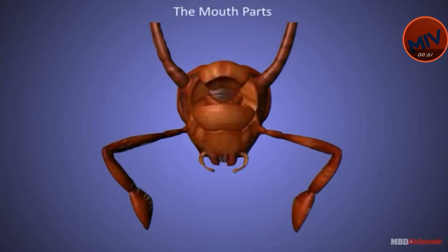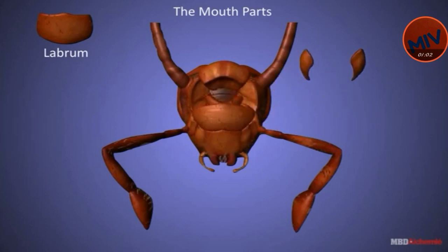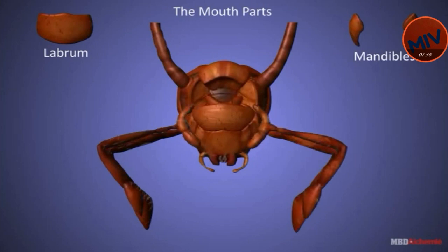Mouthparts: They help the cockroach in biting and chewing its food. Labrum is a broad, movable, rectangular and notched plate. Mandibles are a pair of highly sclerotized triangular structures present on each lateral side of the head. These are masticatory in function.